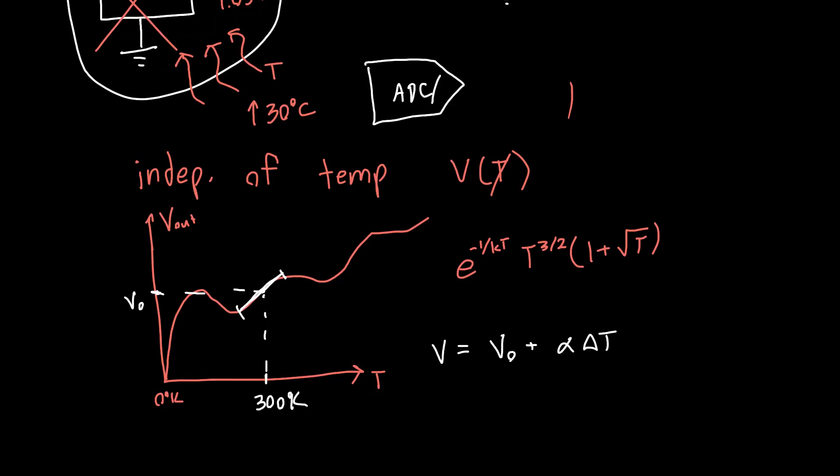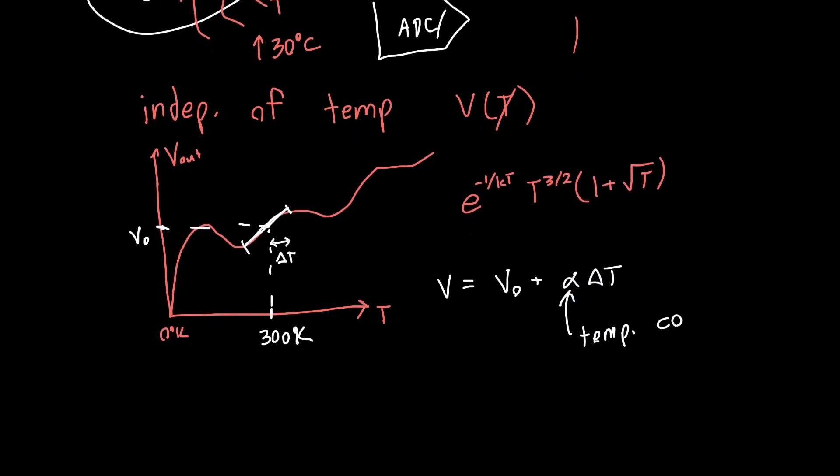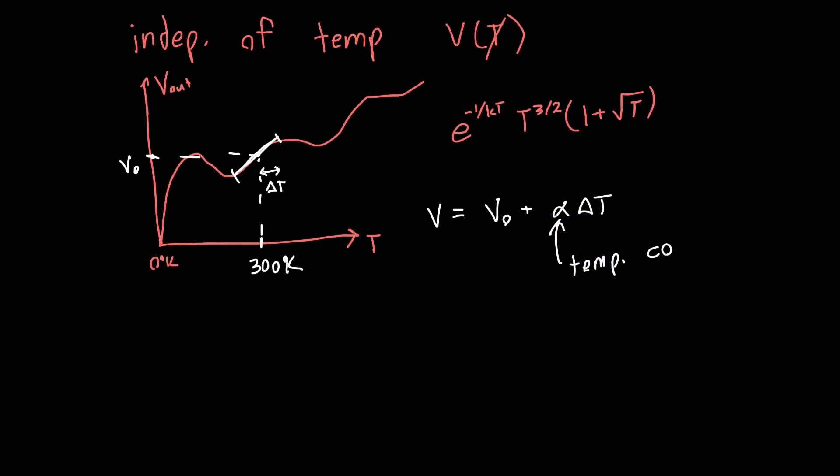And so delta T is say this distance here and it can be positive or negative in this case. And this alpha recall is the temperature coefficient. It's defined at a certain temperature. It's just the derivative of the function as a function of temperature. And you might say well this didn't help. Like we wanted it to be independent of temperature and we have this linear dependence on temperature within a certain region. Like okay if you buy that, but we know that we have a bunch of different circuits at our disposal.